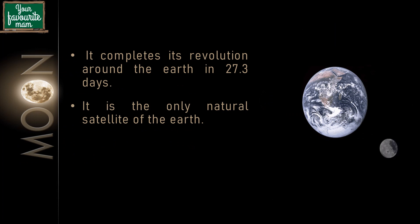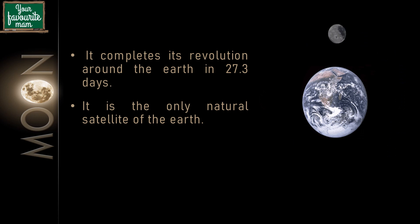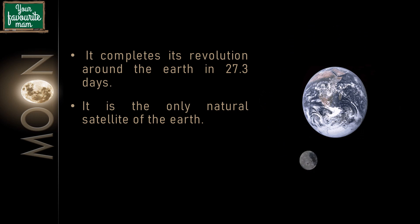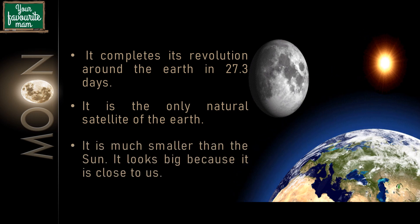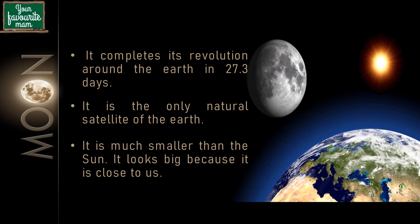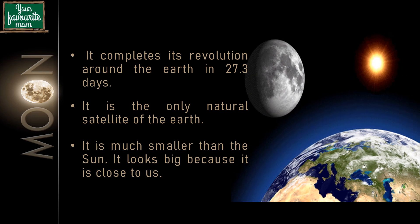The moon completes its revolution around the earth in 27.3 days. It is the only natural satellite of the earth. It is much smaller than the sun but looks big because it is closer to us.